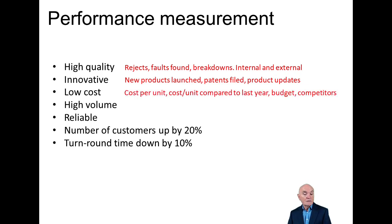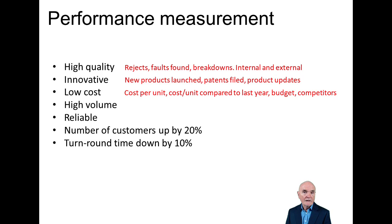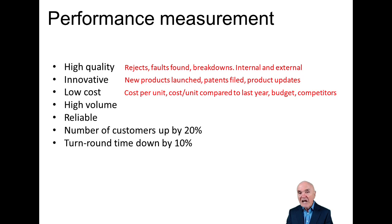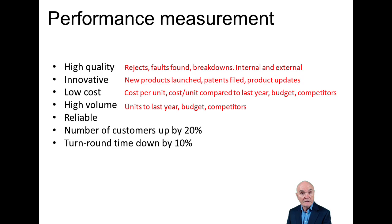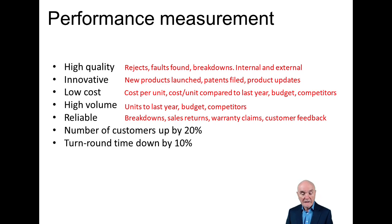Low cost - pretty easy. Cost per unit, cost compared to last year, cost compared to budget, cost compared to competitors. We have to get some idea whether the cost per unit is good enough. When looking at standard setting and benchmarks, it can be quite dangerous to look only internally at what you think is good, if externally your competitors are doing far better - so we have to justify these targets. High volume - easy: units compared to last year, compared to budget, compared to competitors. Reliability is a bit like quality - breakdowns, number of warranty claims by customers, number of sales returns, customer feedback.